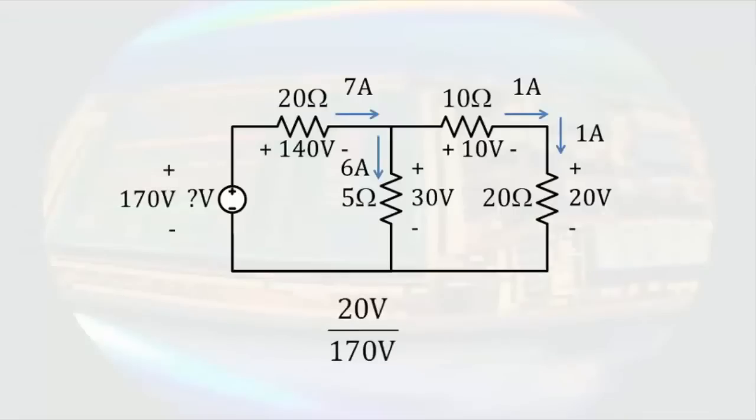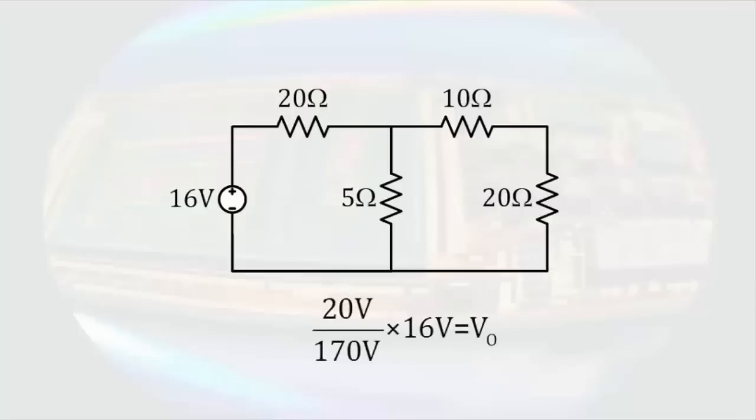So if the source had been 170 volts, the output would be 20 volts. By linearity, the ratio of the actual VO to the source of the 16 volts must be the same. So a 16-volt source results in an output voltage of 1.88 volts.